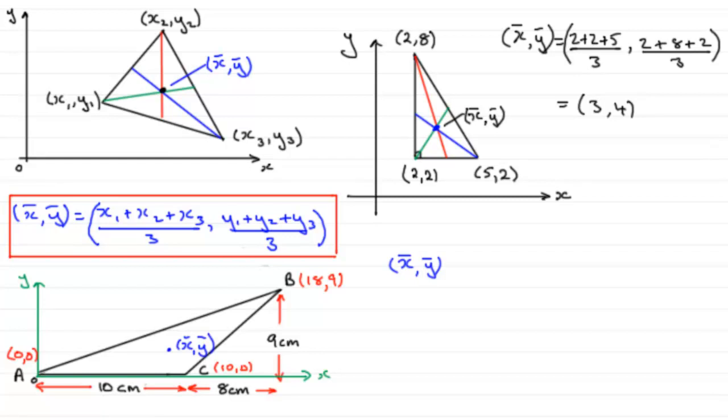So to get x bar, y bar, then it's going to be sum of the x coordinates. So that will be 0, plus 10, plus 18, and that's all over 3. And then for y bar, it's going to be 0, plus 0, plus 9, all over 3.